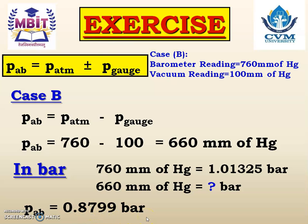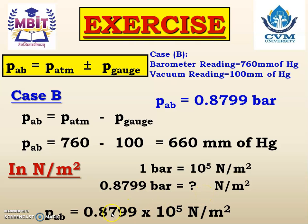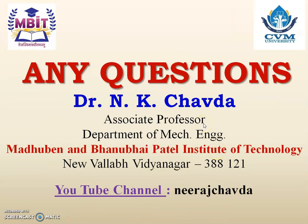Now we convert 0.8799 bar into newton per meter square. Since 1 bar equals 10 raise to 5 newton per meter square, 0.8799 bar equals 0.8799 into 10 raise to 5 newton per meter square. This is the complete answer for case B. Kindly like, share and subscribe to my YouTube channel Nirat Chavra. Thank you.